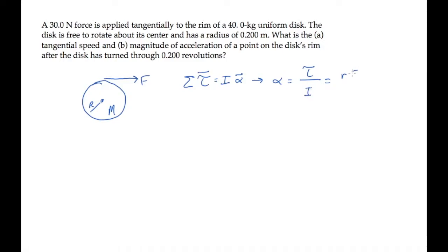The torque is RF sine phi, and the moment of inertia for a solid disk is one-half mR squared. The R in the numerator is the distance from the pivot, the center, to the point where the force is applied. That's the disk's radius.